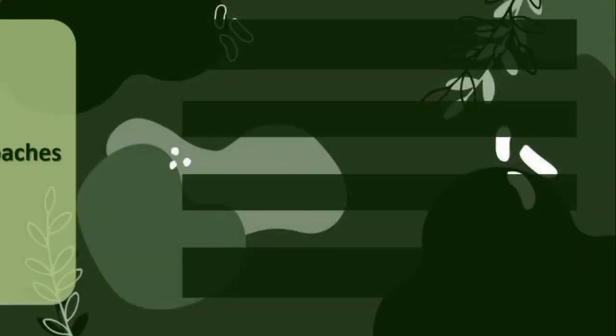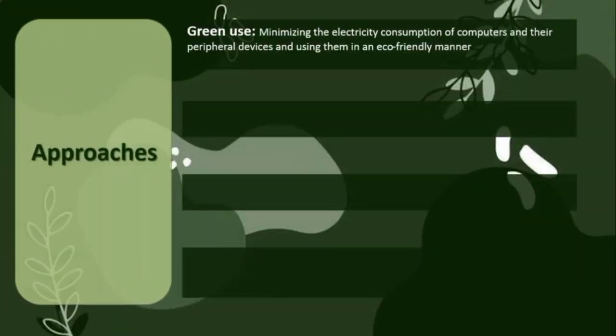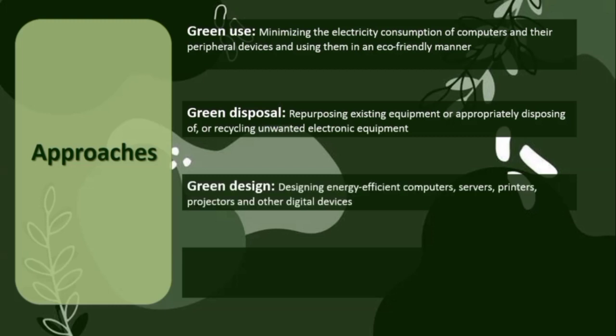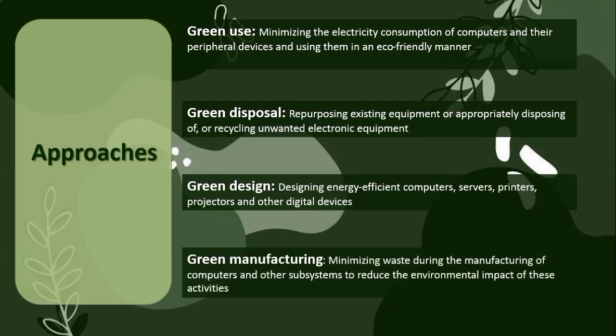The approaches of Green Computing are: Green Use, which means minimizing electricity consumption of computers and their peripheral devices and using them in an eco-friendly manner; Green Disposal, which involves repurposing existing equipment or properly disposing of or recycling unwanted electronic equipment; Green Design, designing energy-efficient computers, servers, printers, projectors, and other digital devices; and Green Manufacturing, minimizing waste during the manufacturing of computers and other subsystems to reduce the environmental impact.